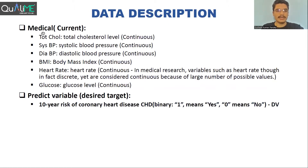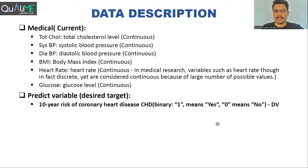These are all continuous variables representing the current medical details of the patient. Finally, the target variable is 10-year risk of coronary heart disease (CHD). It is a binary variable consisting of one and zero, where one means yes and zero means no.